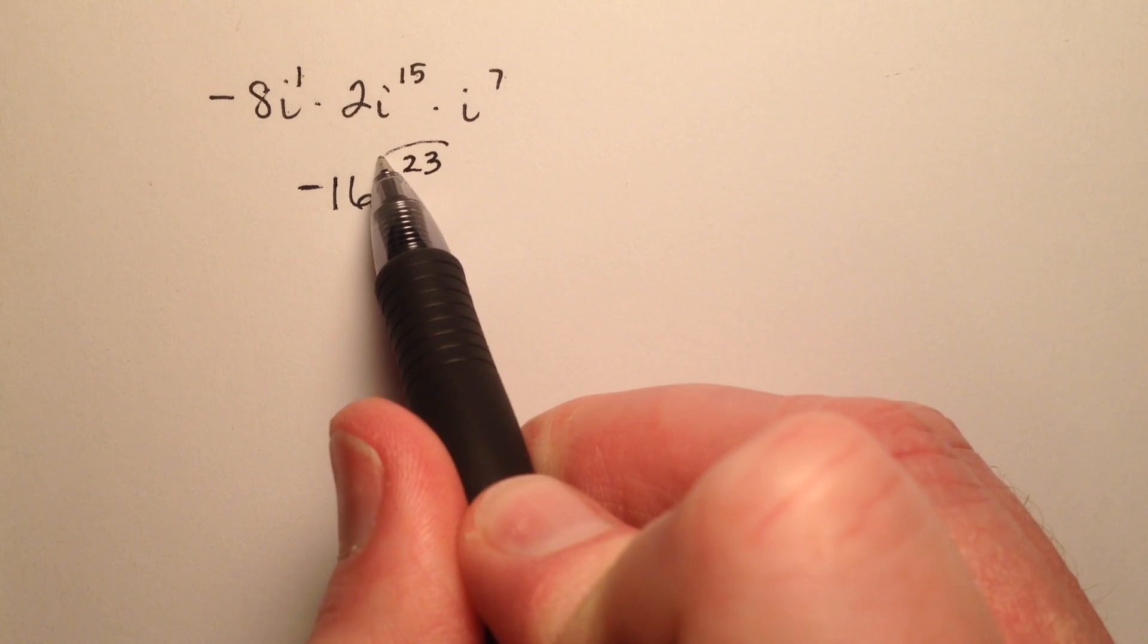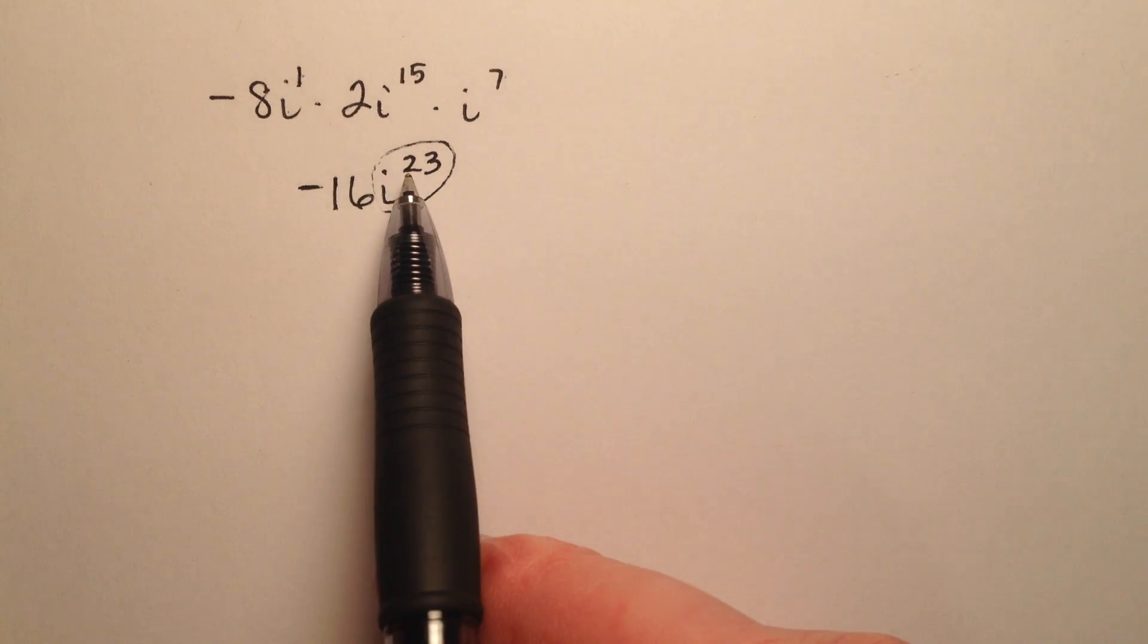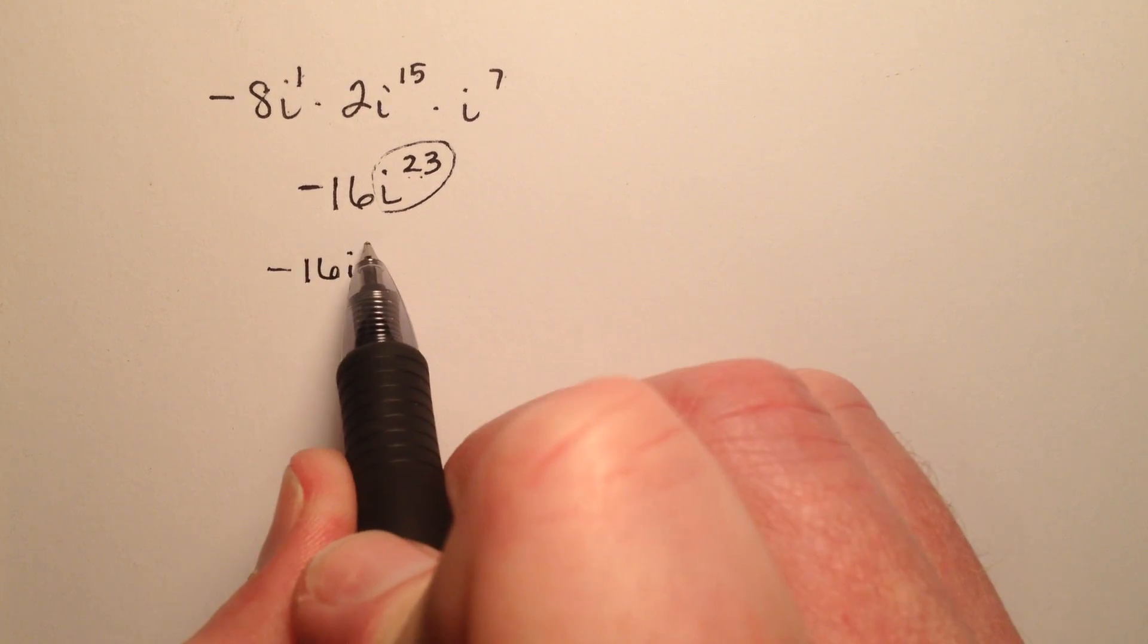Well we can't leave it as i to the 23rd. I need to simplify this power of i, and we do so first by looking for a multiple of 4 that's just under 23, and that looks like it's going to be i to the 20th.